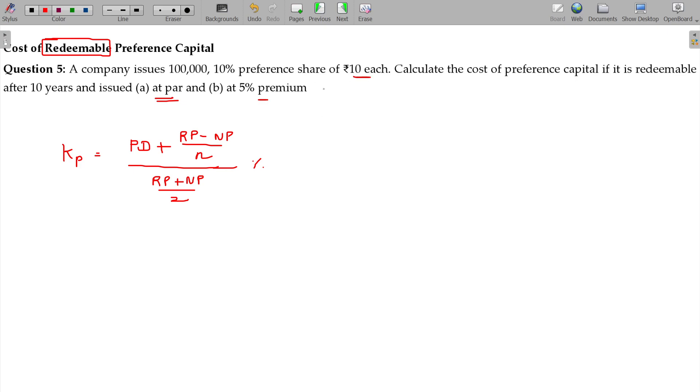Now, 10 rupees each, 10 percent preference share capital. If you multiply these two, then you will get the preference dividend of 1 rupee.